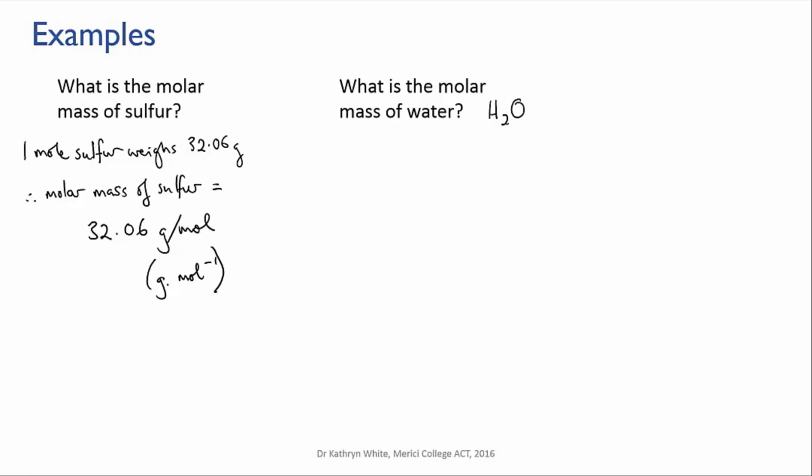If you have two water molecules, then there are two oxygen atoms and four hydrogen atoms. And if you have one mole of water molecules, that means you have one mole of oxygen atoms and two moles of hydrogen atoms.